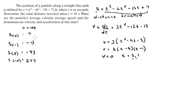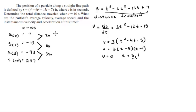Now that you have where the particle is at each of these positions, find the difference between them. From 7 to -13 is 20 feet. From -13 to -93 is 80 feet. From -93 to 257 is 350 feet. Adding all these together gives a total distance traveled of 450 feet.